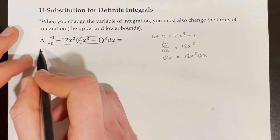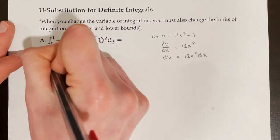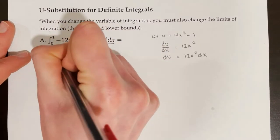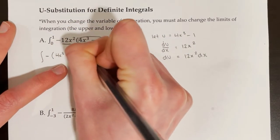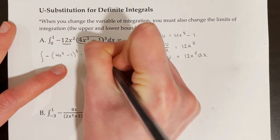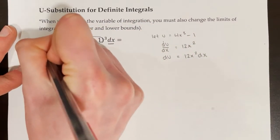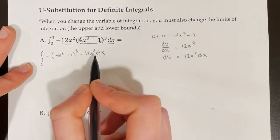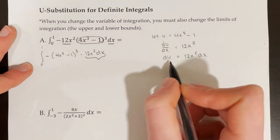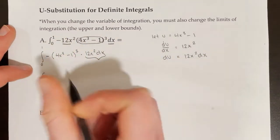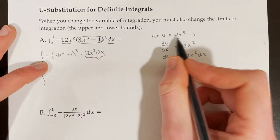For now, I'm going to leave the upper and lower limits blank, and then show you what to do with that later. We have a negative, and then 4x cubed minus 1, all cubed, times 12x squared dx. Now we start swapping things out. We can actually keep the bounds on here because we haven't changed the variable of integration yet. Instead of having 12x squared dx, we write du. And instead of having 4x cubed minus 1 cubed, we have negative u cubed.